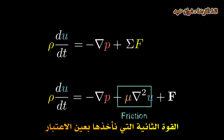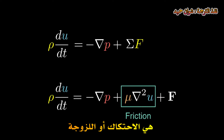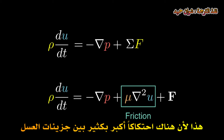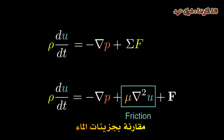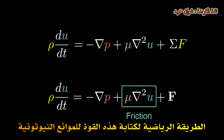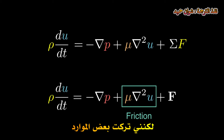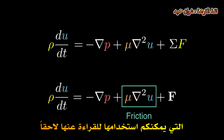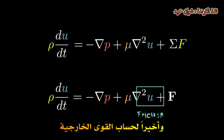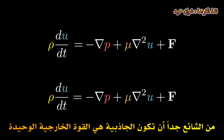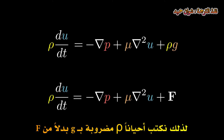The second force we factor in is friction, or viscosity. If I pour water into a cup, the water moves quite fast, whereas if I'm pouring honey, it moves quite slow. This is because there's a lot more friction between the molecules of honey compared to water. The mathematical way of writing this force for Newtonian fluids is this expression here. And finally, to account for external forces, we denote any external force by the letter F. It's pretty common that gravity is the only external force, so we sometimes write ρg instead of F.